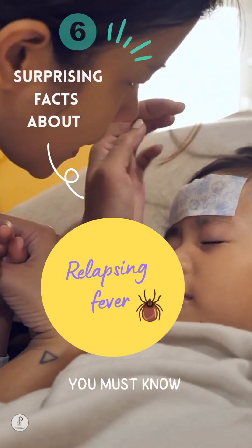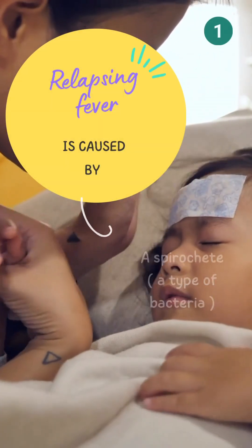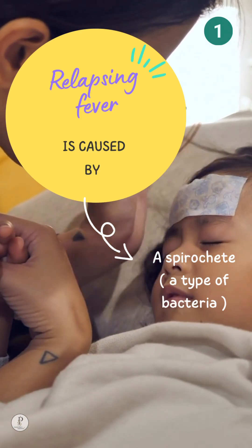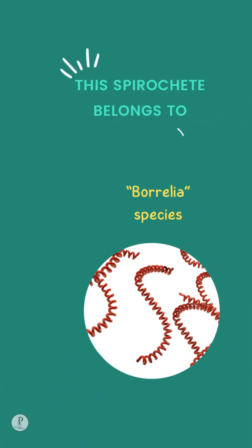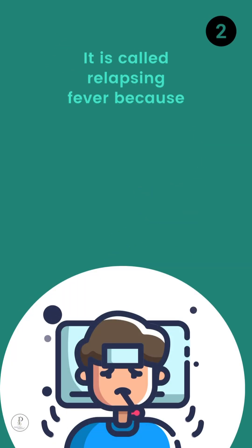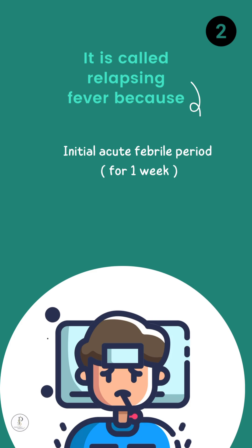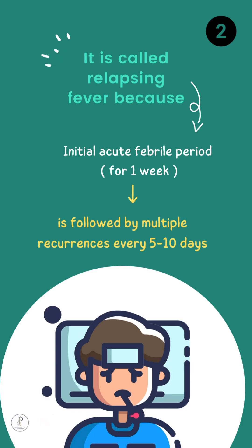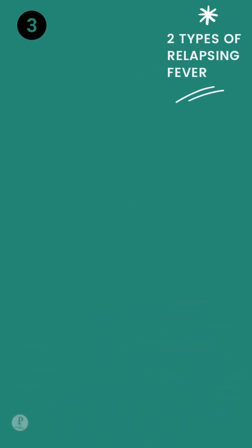Relapsing fever is caused by a spirochete, which is a type of bacteria. This spirochete belongs to the Borrelia species. It is called relapsing fever because the initial acute febrile period, which lasts for one week, is followed by multiple recurrences every 5 to 10 days, with up to 7 recurrences.